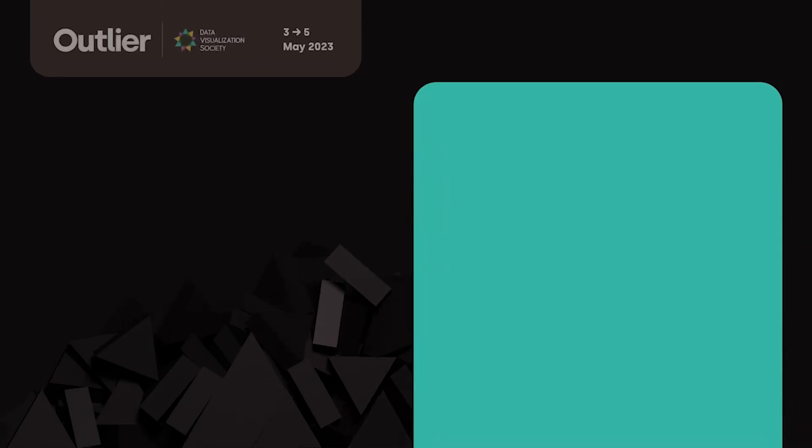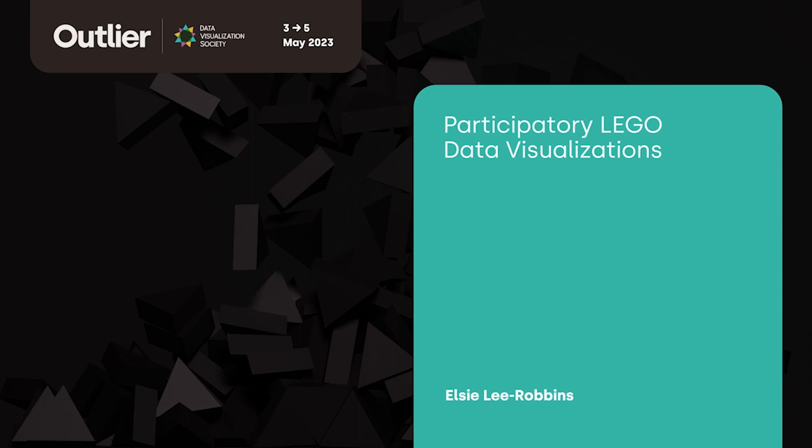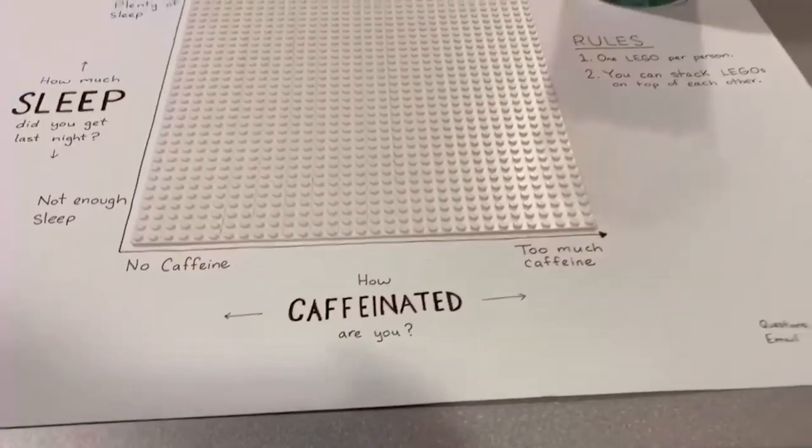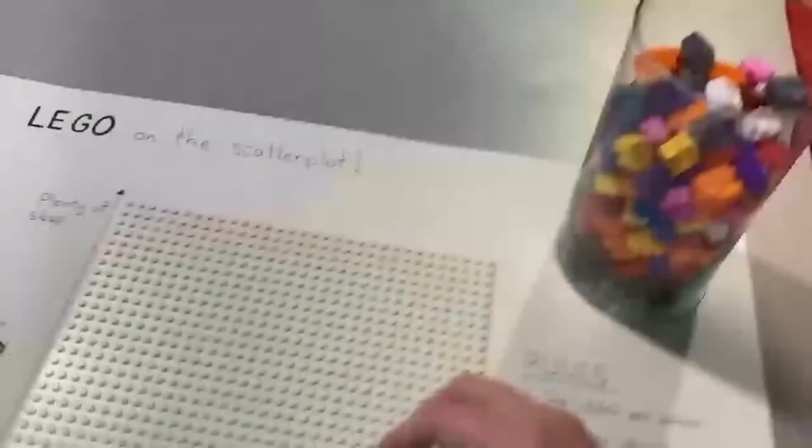I'm Elsie Lee Robbins, and I created a participatory visualization out of Legos. In my office kitchen, I put out an empty square base plate with some axis labels. On the y-axis is how much sleep did you get last night, and on the x-axis is how caffeinated are you. I invited everyone to put a Lego brick on the scatterplot to participate.